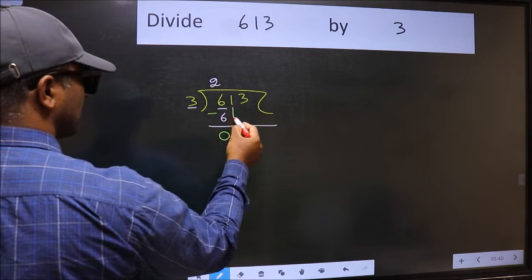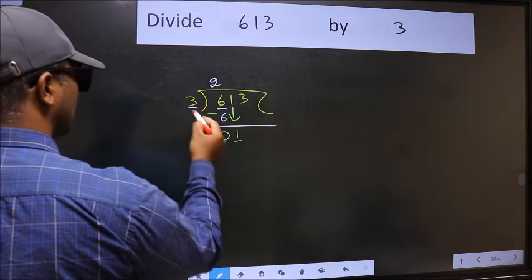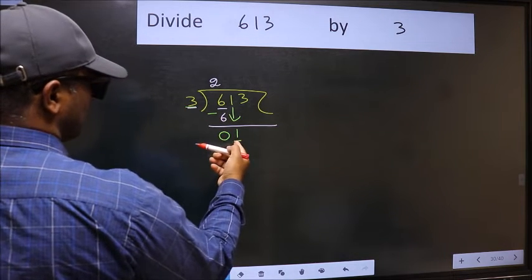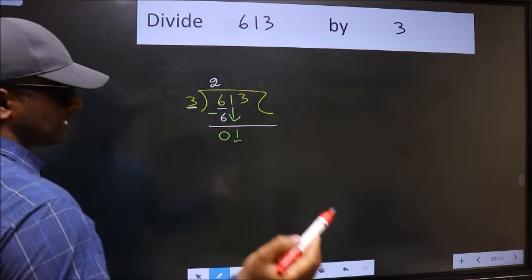After this, bring down the beside number. So 1 down. Now here we have 1 and here 3. 1 is smaller than 3, so we should bring down the second number.